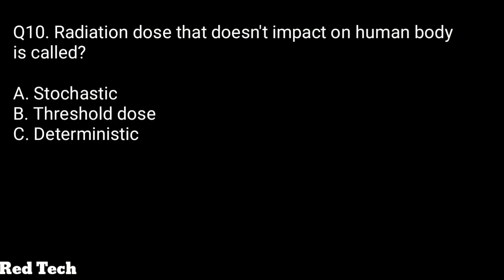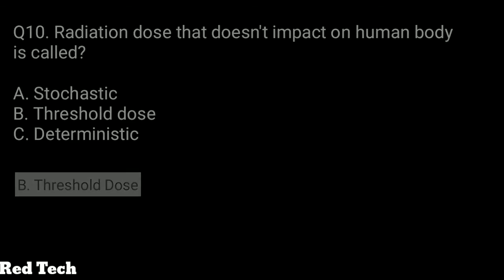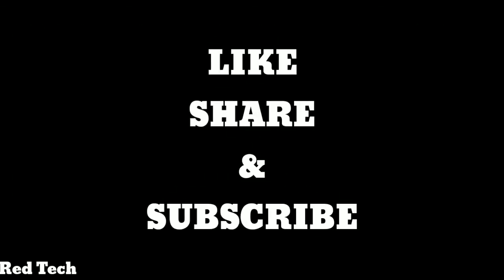Question number ten: the radiation dose that does not impact the human body is called what? The options are stochastic, threshold dose, or deterministic. The right answer is threshold dose — the threshold dose is the dose which does not impact the human body, and it is the scale by which we measure whether deterministic or stochastic effects occur, and whether we are in a safe region or not. That's all for this video — please subscribe if you like it, and thanks for watching.